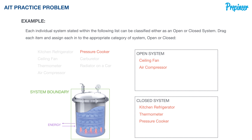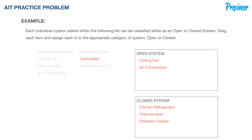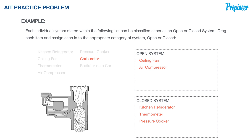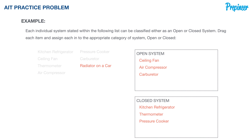What about a carburetor? Here's a typical carburetor with our system boundaries. The carburetor takes in gas, takes in air, and exerts them out as an air-gas mixture. Therefore it is considered an open system.